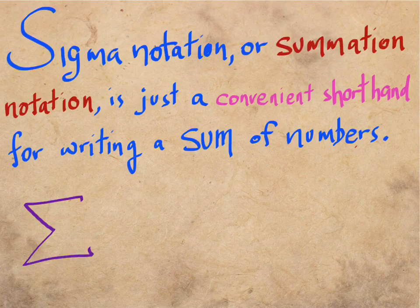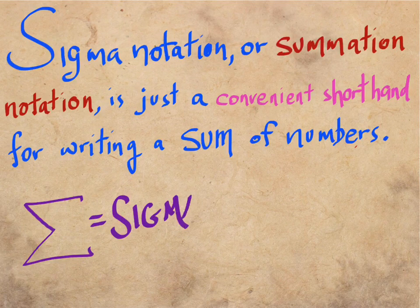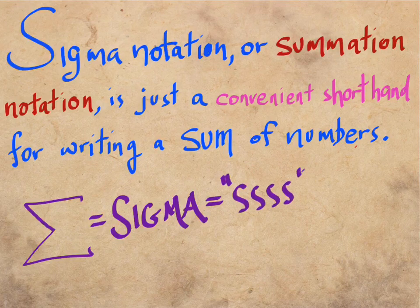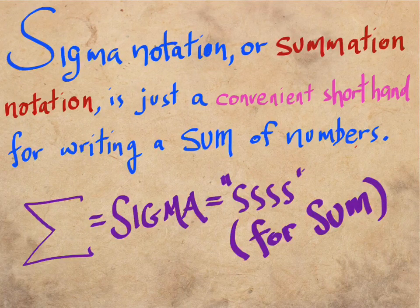The symbol itself is right there. That is the Greek letter sigma from their alphabet, and in their alphabet that letter makes the s sound, which we use because 'sum' starts with s. So it makes sense. We're calling it sigma, or sum notation.